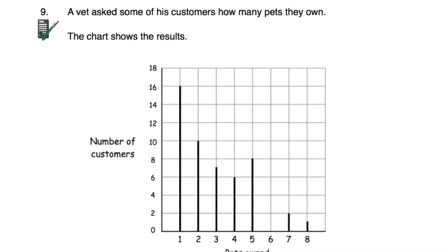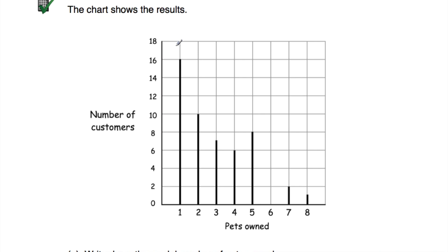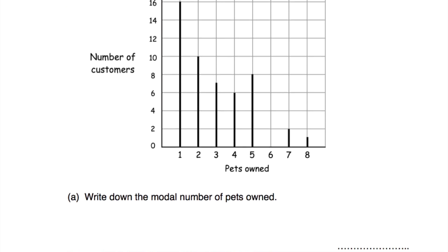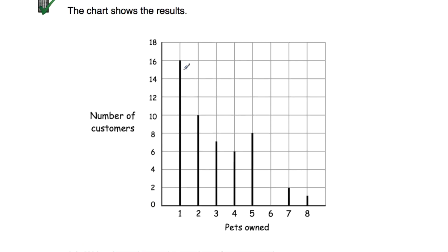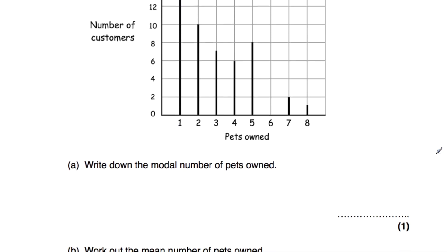Question number nine: Yvette asked some customers how many pets they owned. The chart shows 16 customers own one pet, 10 own two pets, seven own three pets, six own four pets, eight own five pets, zero own six pets, two own seven pets, and one owns eight pets. Part A: the modal number of pets owned is one — that's the highest frequency and the tallest vertical line.